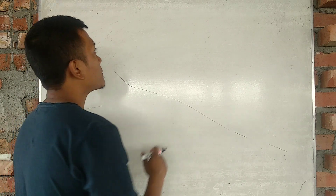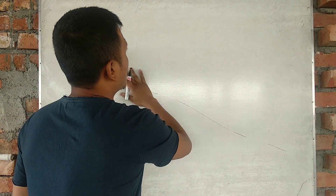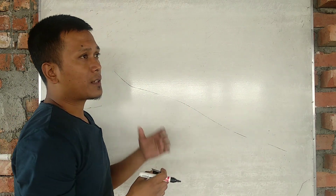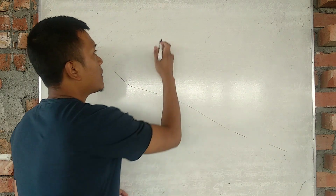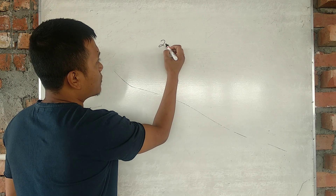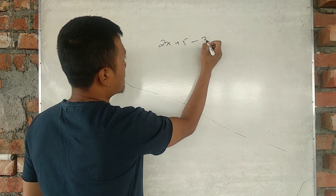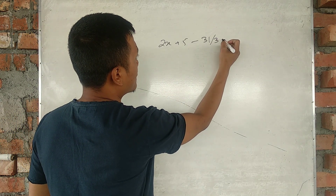This is the first expression. The expression is 2x plus 5 minus 31. This is what we are talking about — this expression is like 2x plus 5 minus 31, one divided by 3.